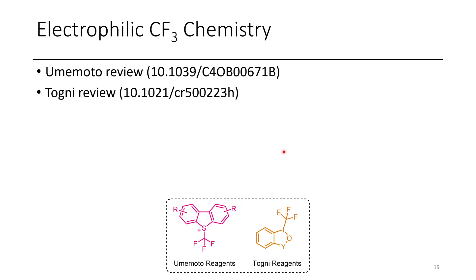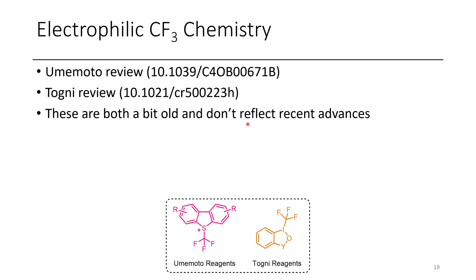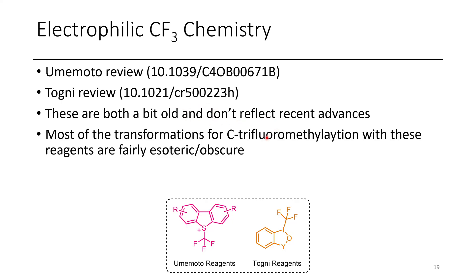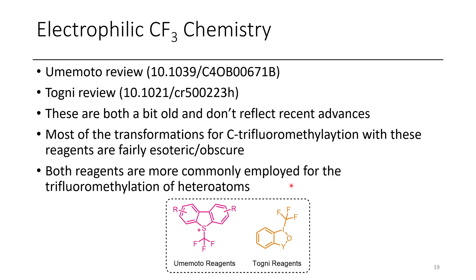Electrophilic CF3 chemistry is a bit more complicated, since nucleophiles such as alcohols, amines, and thiols tend to be more reactive with electrophilic CF3 sources than most carbon nucleophiles. Reviews of Umemoto reagent chemistry and Togni reagent chemistry are referenced here, though they are somewhat dated and don't cover more recent advances. Most C-CF3-forming reactions reported for these reagents are fairly obscure. Both are more commonly employed for functionalization of heteroatoms such as thiols.